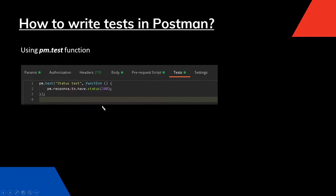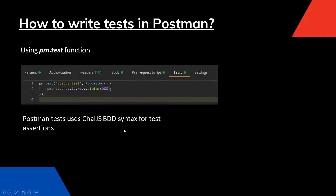Now what is this syntax .to.have? Postman test uses chai.js BDD syntax for test assertions. For those not familiar with chai.js, it's basically a JavaScript testing library that allows you to add test assertions. Some examples are .to.have, which we just looked at, .to.equal, and .to.not.have. These are some of the common ones. If you go to the chai.js website — I will add the link in the description — you can see a lot more different types of assertions that you can use.